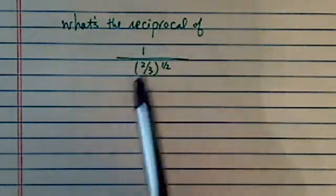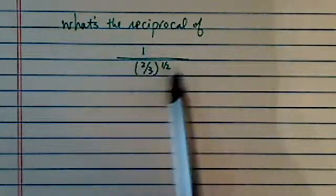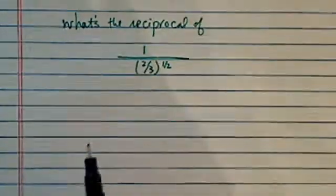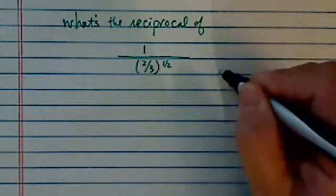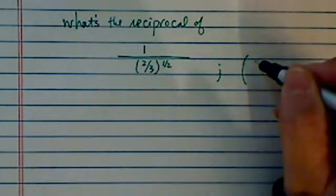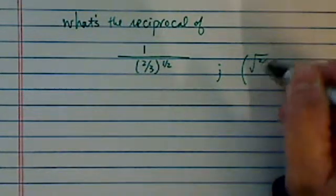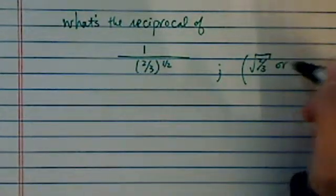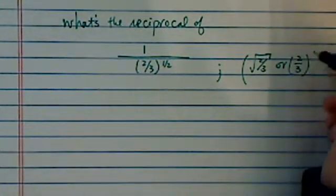what's the reciprocal of 1 over this big long ugly exponential? Well, the short answer is that the reciprocal of this one is just simply radical 2 over 3, or 2 over 3 to the half.